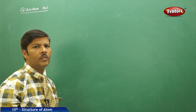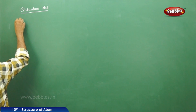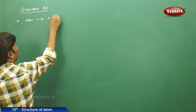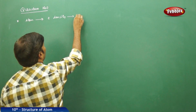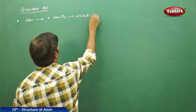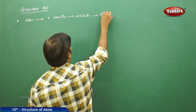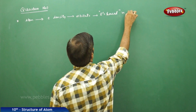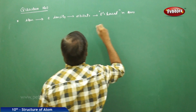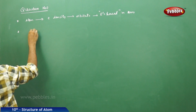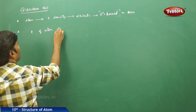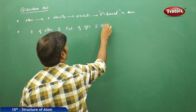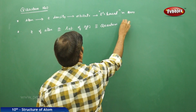The next topic under our discussion is quantum numbers. As discussed in the previous topic, if you take an atom, the atom has electron density. Electron density depends on the orbital, and orbitals are made up of electrons housed in them. These electrons — that means the electron of an atom — are characterized by a set of numbers called quantum numbers.